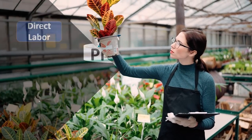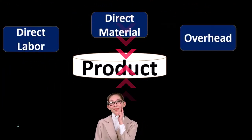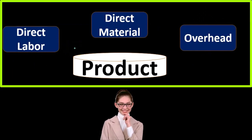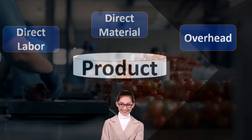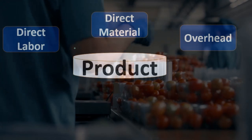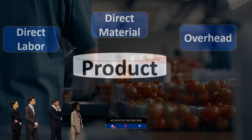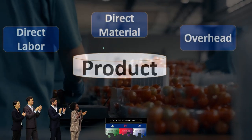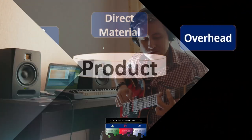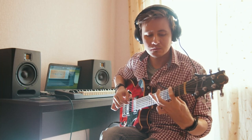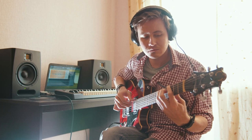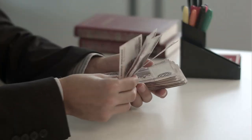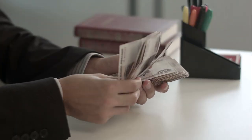The product costs are going to include costs of direct labor, direct material, and overhead. These are the three main categories we will be using when we manufacture inventory — when we make the asset of inventory, when we make the stuff that we're going to sell. That stuff is comprised of not just direct materials, but substantially of other things such as labor and overhead. These are the three things that make up the cost of whatever product it is that we sell.